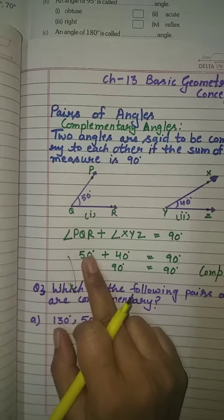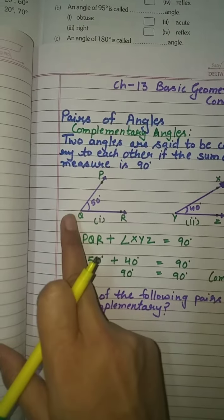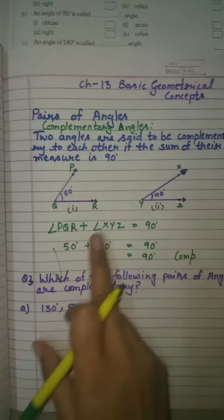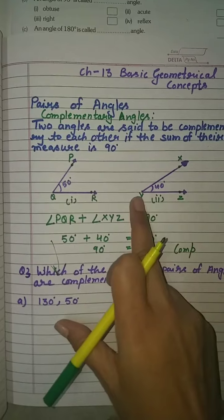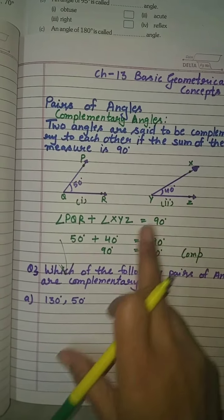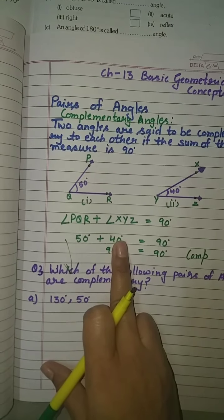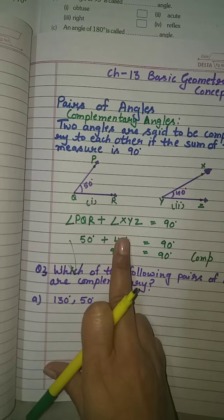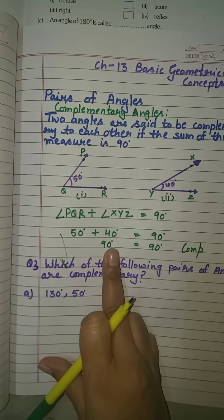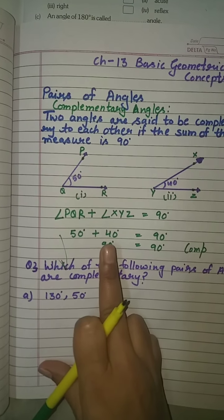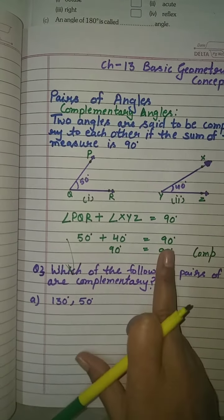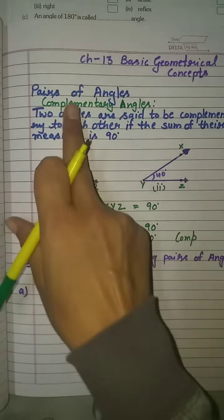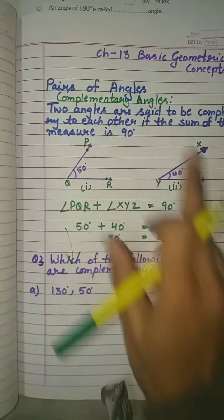Why do we write 50? Because angle PQR is 50 degrees and angle XYZ is 40 degrees. So 50 plus 40 equals 90 degrees, and 90 degrees equals 90 degrees. It means these are your complementary angles.